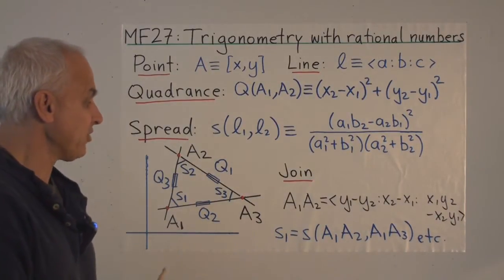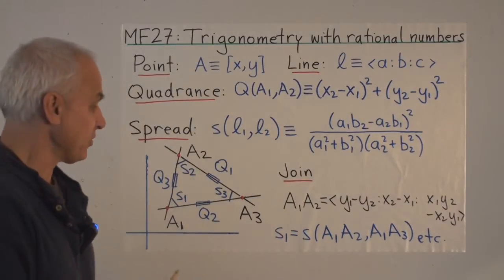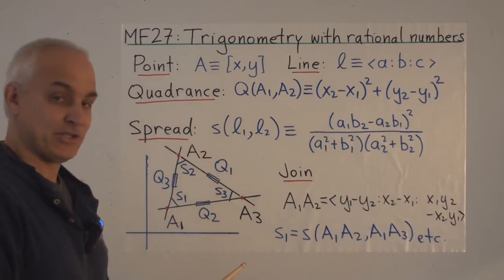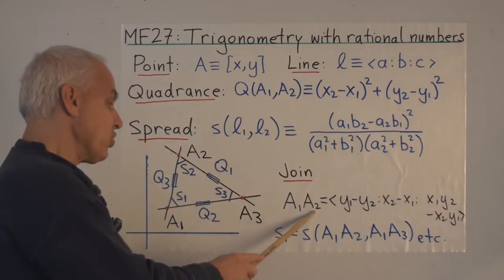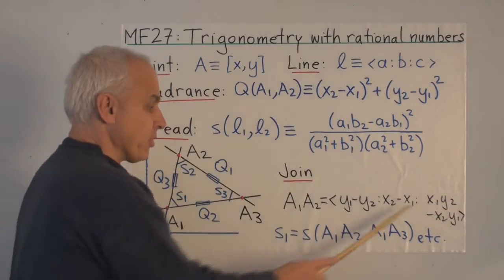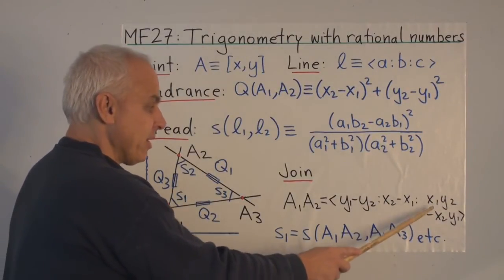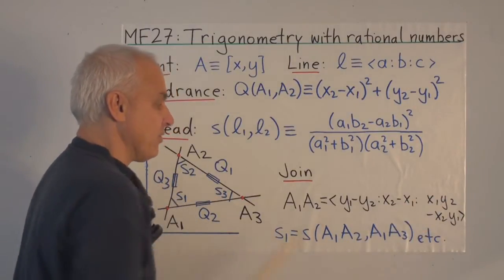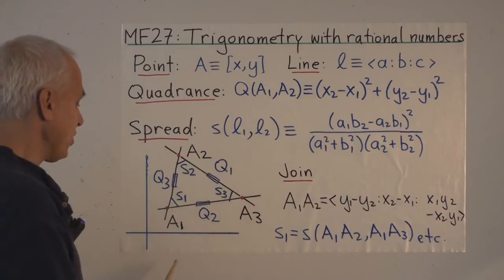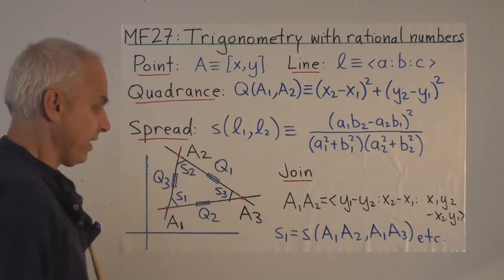One other thing we need to remember is the formula for the line joining two points. If we have a point (x1, y1) and another point (x2, y2), then the line joining them, denoted a1a2, is given by the proportion: y1 minus y2, to x2 minus x1, to x1·y2 minus x2·y1. So when we say the spread s1, we're really talking about the spread between lines a1a2 and a1a3.